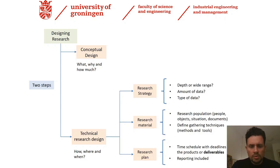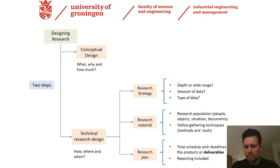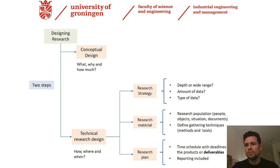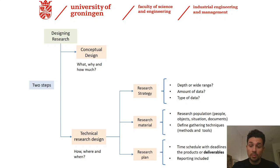That was a brief introduction to the first step of designing a research project. The second step is the operationalization phase — the technical research design. Here we will address three main elements: our research strategy, research material, and research plan. We are using the jargon of the book, but feel free to make use of the jargon from specialized literature that fits your research plan.